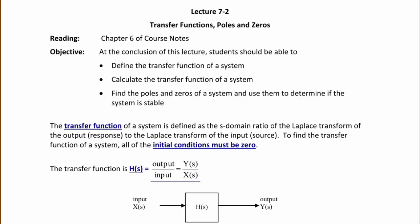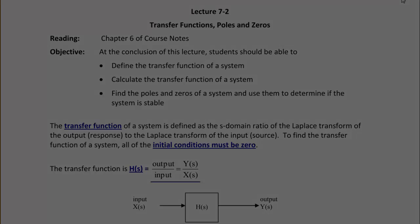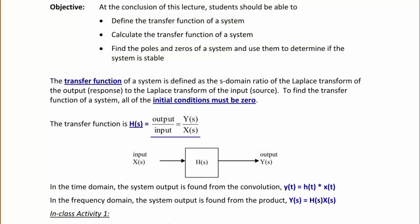The block diagram shows the input as X(s), the transfer function representing the system, and the output as Y(s). Recall that in the time domain, the output is found from the convolution y(t) = h(t) convolved with x(t). In the frequency domain, the system output is found from the product Y(s) = H(s) times X(s). The benefit of moving to the frequency domain is that we can use algebra and multiplication to solve these systems.